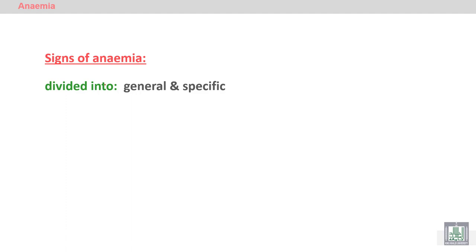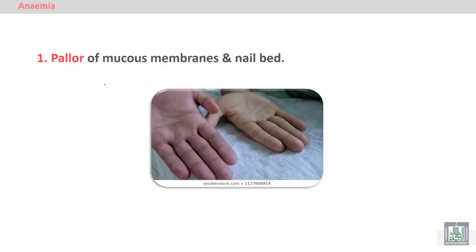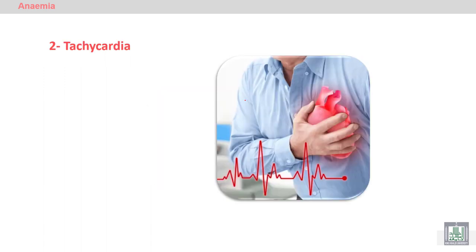Signs of anemia are divided into general and specific. General signs are seen in all types of anemia, while specific signs are characteristic of each type. General signs include pallor of the skin and mucous membranes — you can see pallor of the palm of the hand in comparison with a normal palm. Tachycardia can be measured from the radial pulse or by auscultating the heart rate, and ECG can confirm tachycardia.